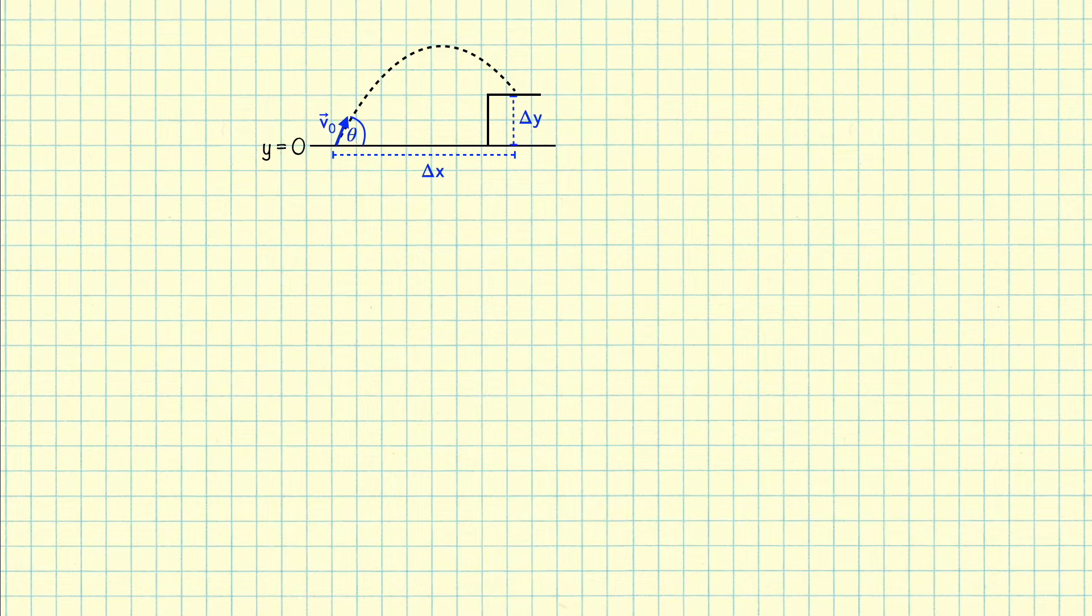For this problem we're going to need to use two of our kinematics equations, the one for delta y and the one for delta x. If you don't know where these equations come from, I derived them in a previous video. Notice that these equations are functions of time, so we're going to have to find the time at which the ball is caught, assuming it was thrown at time equals 0.